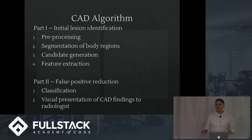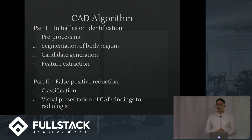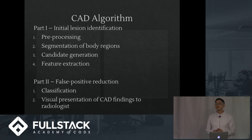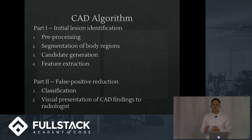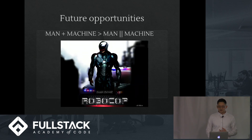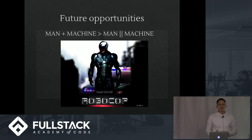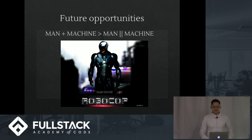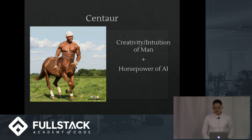In general, our CAD algorithms today are kind of mediocre — they're not doing so well, but they are getting better. Physicians and others in healthcare are concerned that some of these algorithms could take over the place of physicians and displace them. But I think in the future we're actually moving towards a more synergistic model where humans work with machines — classically conceived as a cyborg combination of man and machine. These concepts have evolved into the idea of the centaur: instead of man and machine, it's man and AI, combining the creativity and intuition of man with the horsepower of AI.